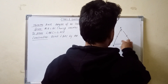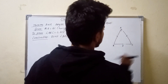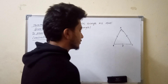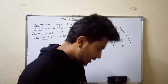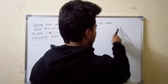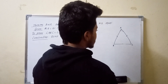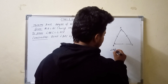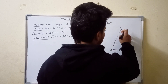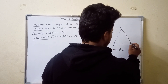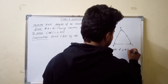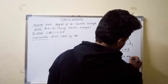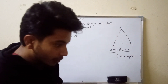What is the isosceles triangle? This is the isosceles triangle. The base angle of the isosceles triangle is equal. This is the base angle of the isosceles triangle — this is the theorem.